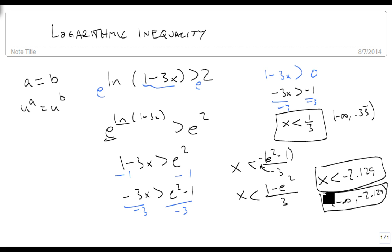It won't always be. You have to look at the intersection and pick the intersection in order to be sure that you've found the right one. But in this particular case, x has to be smaller than 1 minus e squared all over 3.